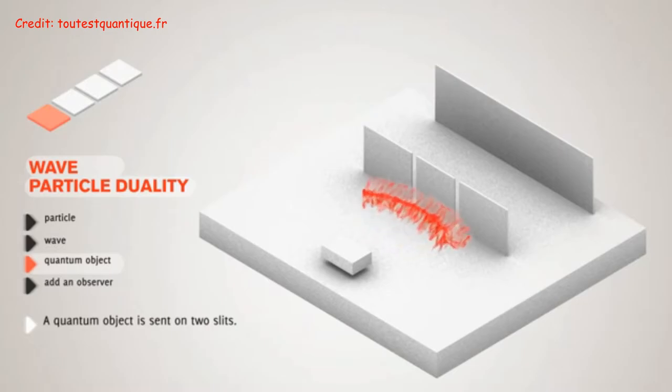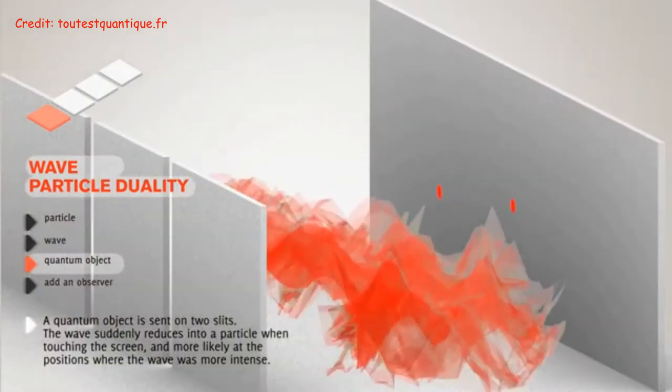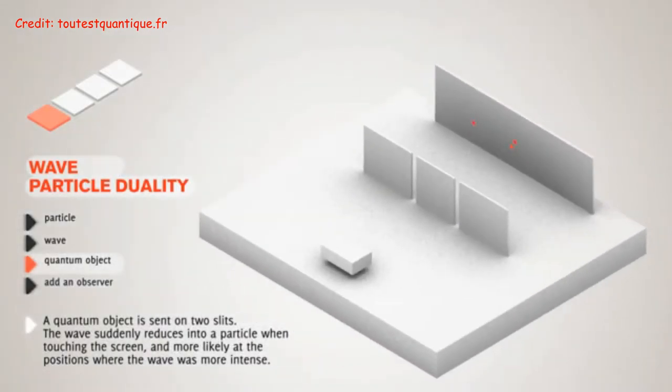Quantum objects have wave-like properties as they go through the slits, and diffract and superimpose within the region beyond the slit, but the moment they touch the screen, they regain their particle properties.